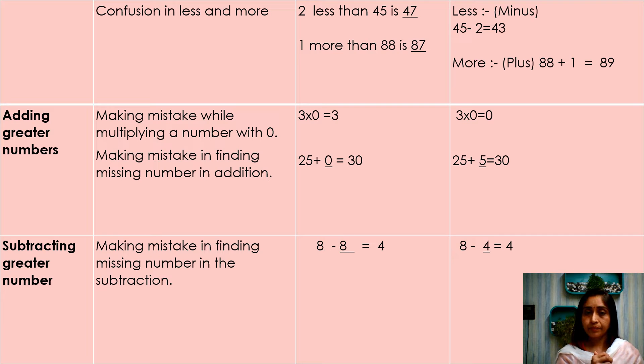25 plus 0 is equal to 30. Instead of 5, they write down 0. Here, how will they find? So 25, they have to keep in mind, and then 26, 27, 28, 29, 30. So how many fingers? There are 5 fingers. So answer is 5. This is addition, that's why they have to count forward.